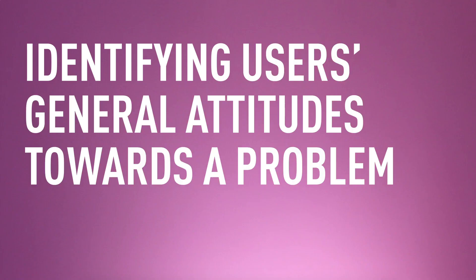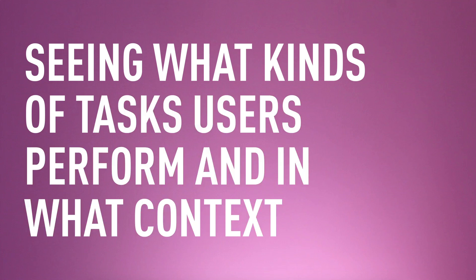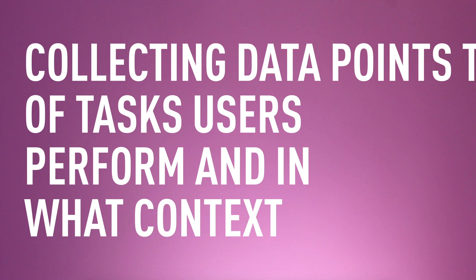Before conducting a user research session you need to be clear on what you want to find out — in other words, what information and insights will help to steer your design project in the right direction? What goals and outcomes will help you discover solutions for your users? Before you formulate specific research goals, think broadly about what you're hoping to learn. Depending on what stage you are in the design process, it may be useful to hold a brainstorming session with key stakeholders to identify the most important objectives. Some common research goals include identifying users' general attitudes towards a problem or concept, gathering users' opinions on two competing websites or apps, seeing what kinds of tasks users perform and in what context, and collecting data points to validate or invalidate initial design ideas.